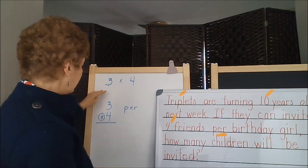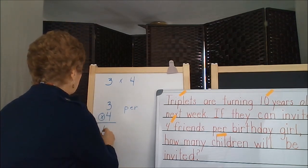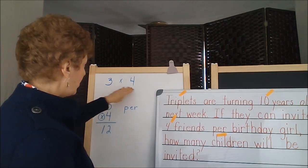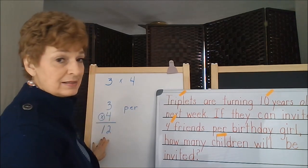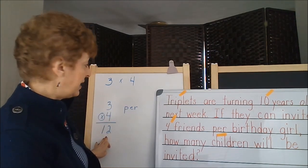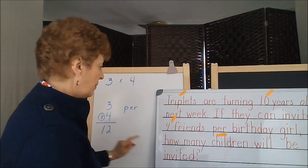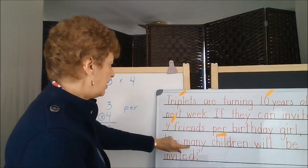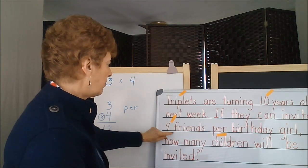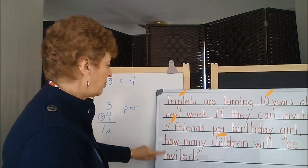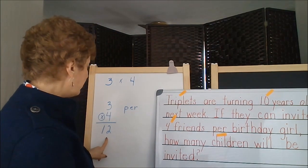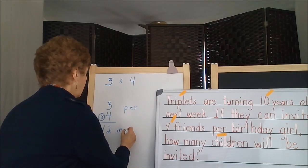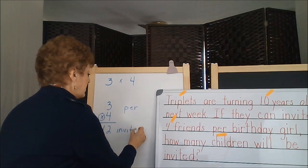If we multiplied these together, we would get 12. 12 is a larger number than either the three or the four — you would be expecting a larger number in a multiplication problem. Let's see if this would answer the question: if they can invite four friends per birthday girl, how many children will be invited? 12 children would be invited. That makes reasonable sense.